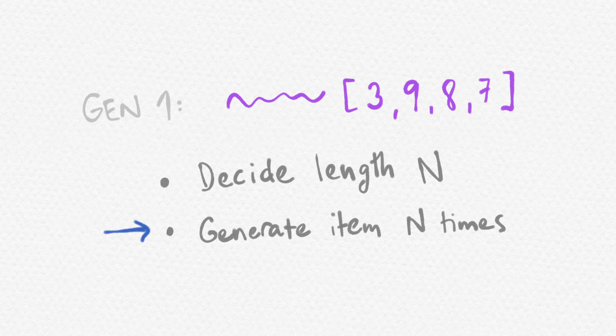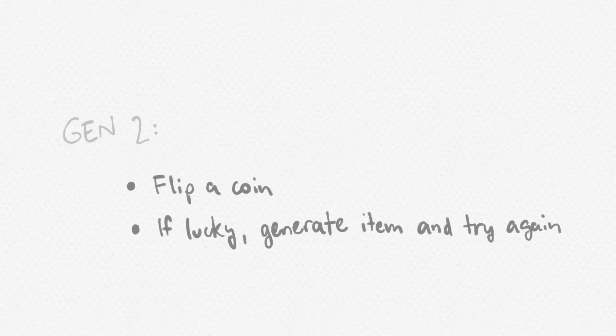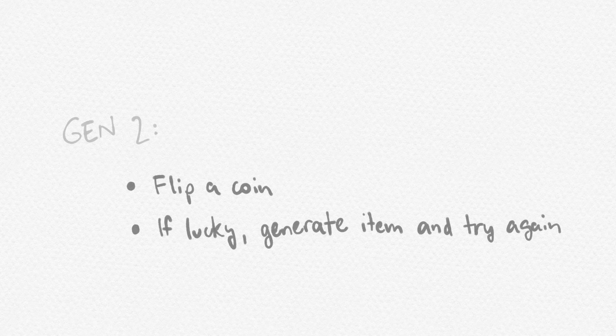A different way to construct a random list might be to flip a coin, with some probability corresponding to the number of items that we want to have. And if it's a 1, then let's generate another item. And if it's a 0, then we have ended.